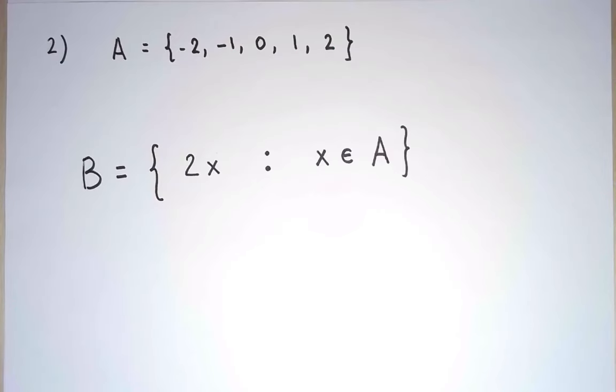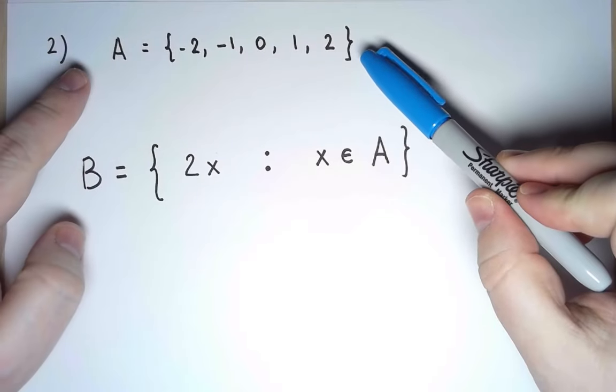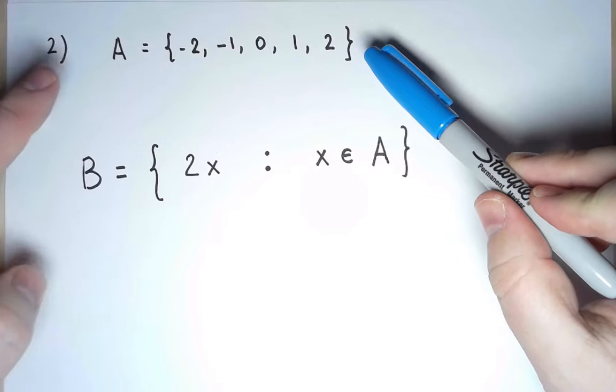Here is a second example. This is a slightly different way to use set-building notation. A is the set we had described earlier, and I'm going to use A to describe a new set B.